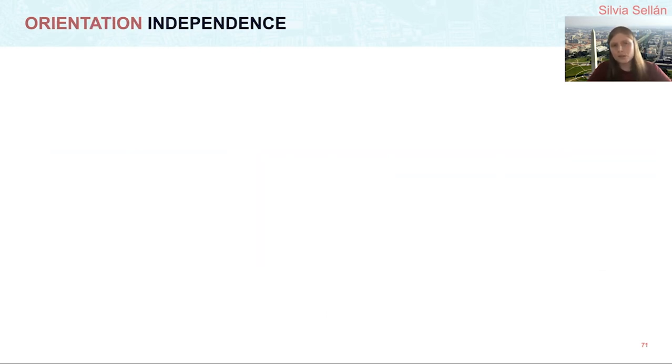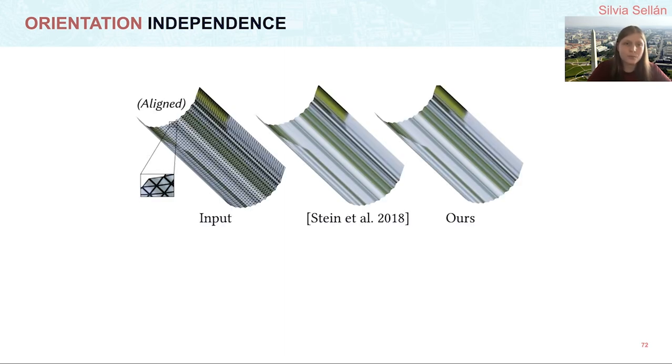Let's move on now to orientation independence. To test this, we consider a cylindrical input, which both our method and the state-of-the-art keep as it is, since it is already a developable surface. This is what we would expect. Note that the edges of the grid, the edges we are plotting as a triangular mesh, are aligned with the direction in which the cylinder is bending.